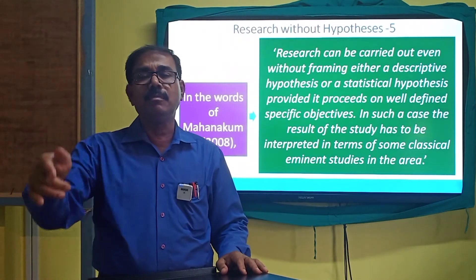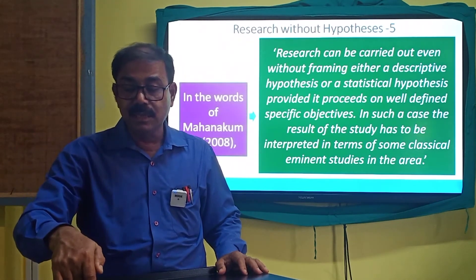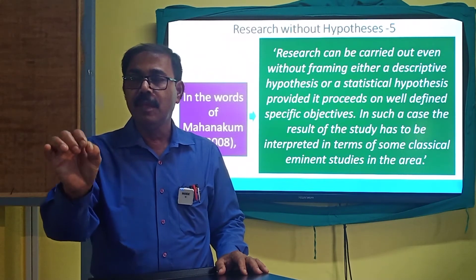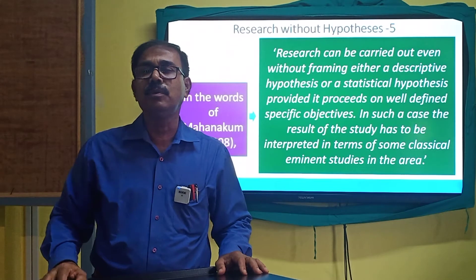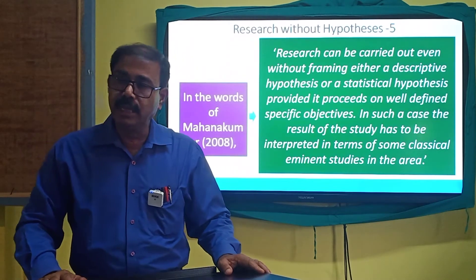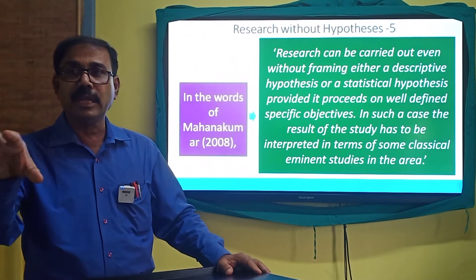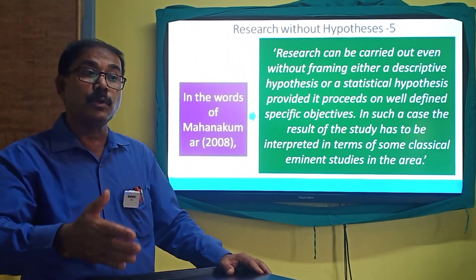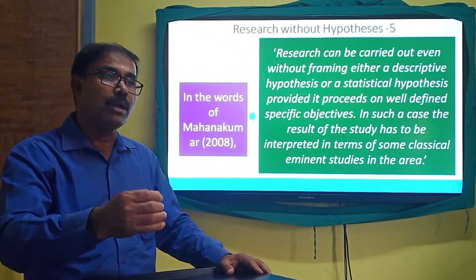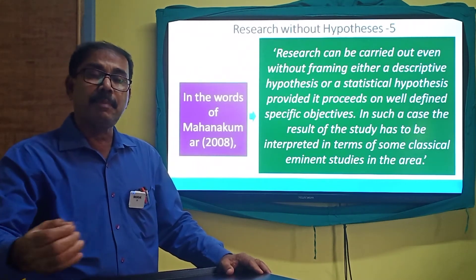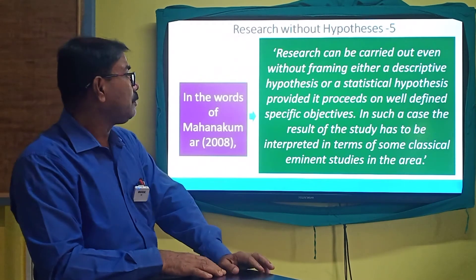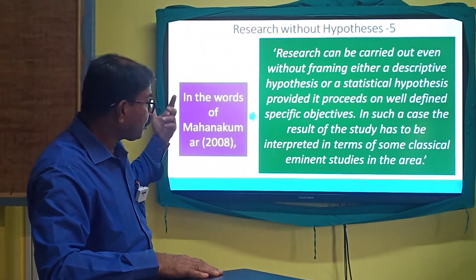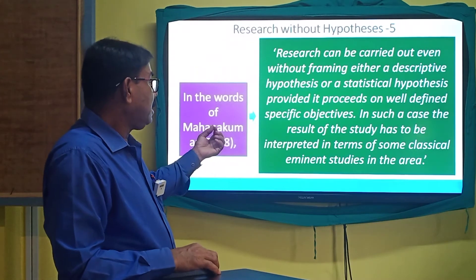Suppose you are doing research and the title of the area is 'Women Empowerment: Views of Vivekananda and Gandhi.' What you are to do in such a situation? You are to study Vivekananda very well. You are to study the views of Gandhi very well. And by summarizing the viewpoints of Gandhi and Vivekananda, you are to conclude your own views and place your own interpretation very systematically and scientifically, so that you can conclude your research findings without any problem or difficulty.